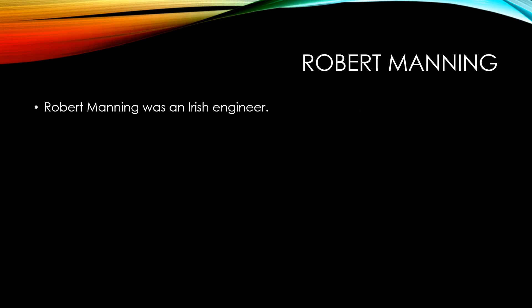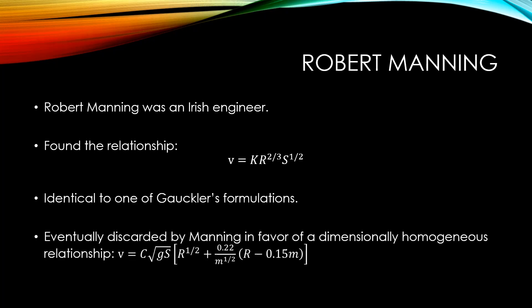It wasn't until Robert Manning, an Irish engineer, compared several of the already existing empirical equations and found a following relationship. Manning's relationship was identical to one of Gauckler's formulations. He eventually discarded this equation in favor of a dimensionally homogeneous relationship shown in this slide. Now, we're not really going to look at Manning's most recent equation, because it was his initial equation, the simplified form of velocity shown above, that eventually made an impact in the civil engineering industry and eventually kept being used to this day.